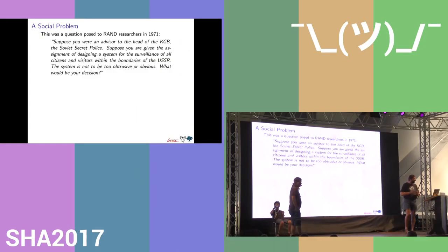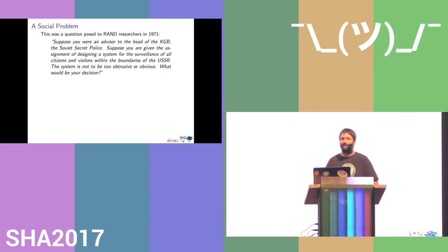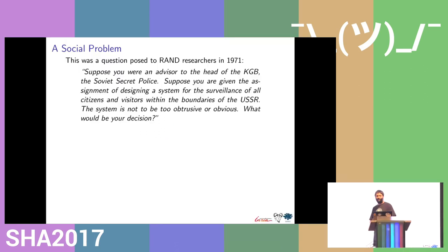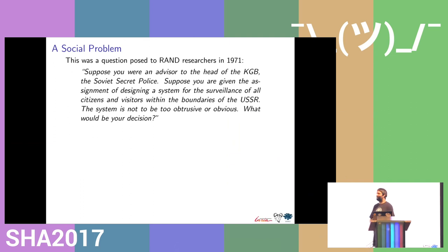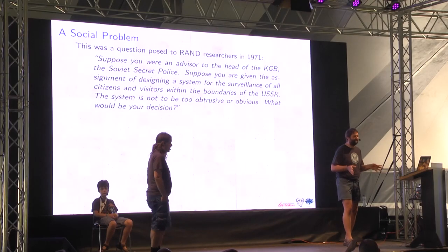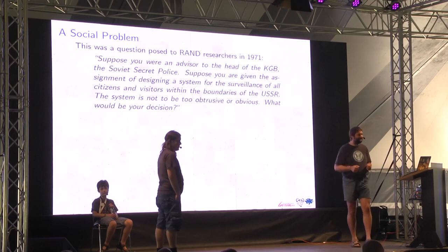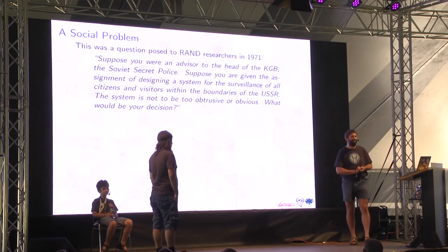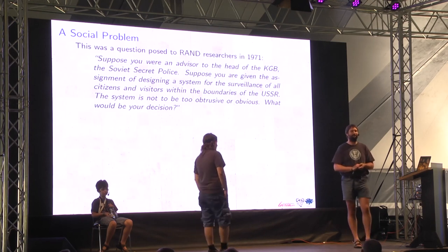Let's start with a bit of motivation. In 1971, the American think tank the RAND Institute was asked: suppose you were an advisor to the head of the KGB, the Soviet secret police, given the assignment of designing a system for the surveillance of all citizens and visitors within the boundaries of the USSR — not too obtrusive or obvious. They pretty much proposed a design that is remarkably similar to modern credit card systems.